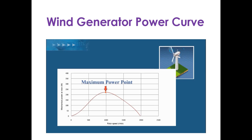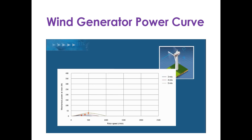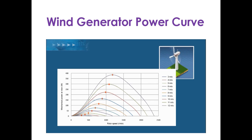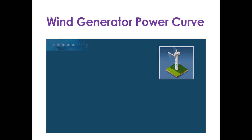The maximum power point is the optimal blade speed for a particular wind speed. When wind speed changes, the torque and power curves shift — more wind means more power at a higher blade speed. The maximum power points are proportional to the cube of wind speed. A good wind generator controller adjusts current output to reach the speed providing maximum power for each wind speed, requiring a variable speed generator.